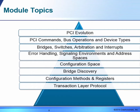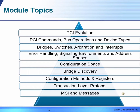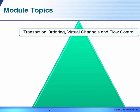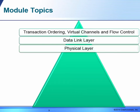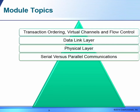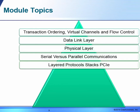We will look at the transaction layer protocol, MSI and messages, transaction ordering, virtual channels, and flow control. We'll cover the data link layer, which is the second layer in the three-layer stack, and the physical layer. We will be looking at serial versus parallel communications and layered protocol stacks in PCI.